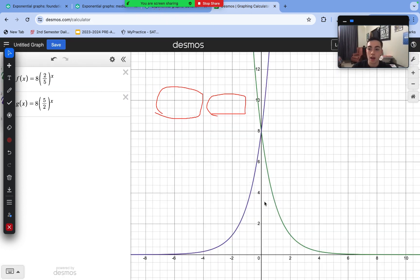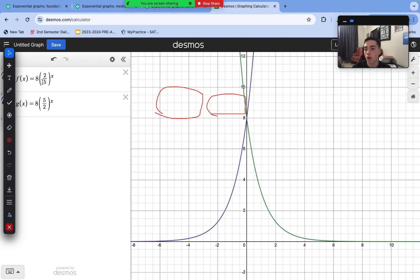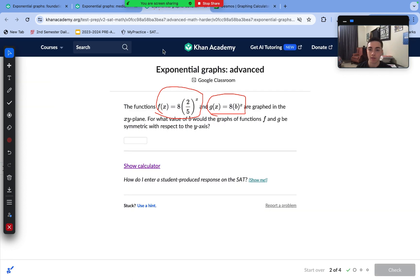We can see clearly here that taking the reciprocal of the B creates a graph that is symmetrical with respect to the y-axis. So when B equals 5/2, which is the reciprocal of 2/5, we can see that they are symmetrical. So that means B equals 5/2.